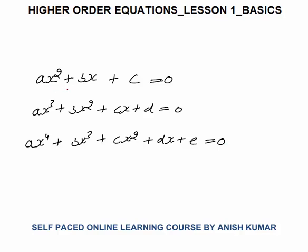Now Ax squared plus Bx plus C equals to 0. You can see that the degree of this equation is 2, because the highest power of x is 2. So this equation is a degree 2 equation, that's why we call it a quadratic equation, and it will have exactly 2 roots.